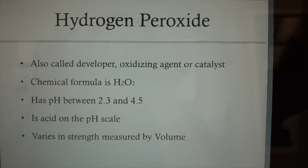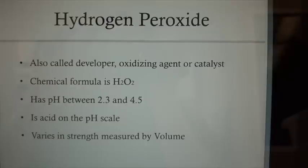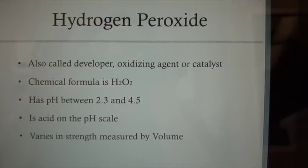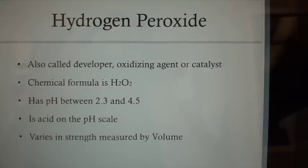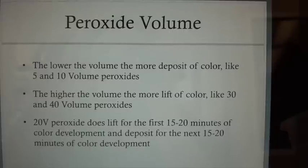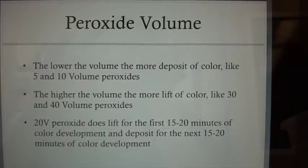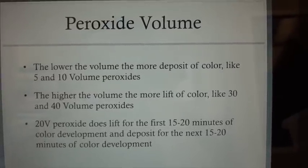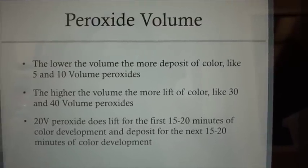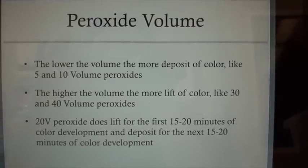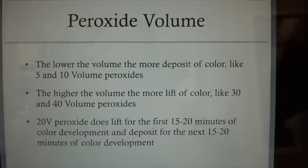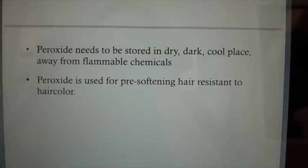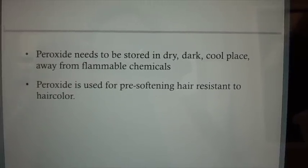Hydrogen peroxide is also called developer, oxidizing agent, and catalyst. Its chemical formula is H2O2. It has a pH between 2.3 and 4.5, making it acidic on the pH scale. It varies in strength measured by volume. The lower the volume, the more deposit of color — such as 5 and 10 volume peroxides. The higher the volume, the more lift — such as 30 and 40 volume peroxides. 20 volume peroxide lifts for the first 15 to 20 minutes of color development and deposits for the next 15 to 20 minutes. Peroxide needs to be stored in a dry, dark, cool place away from flammable chemicals.